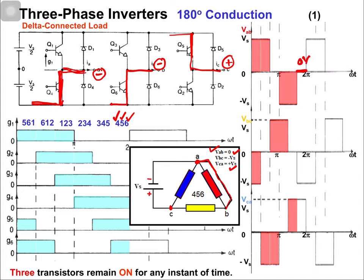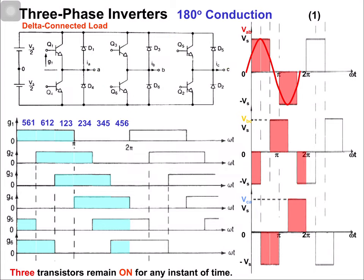If we continue these switching states we can move onward. All of these waveforms are 120 degrees displaced with respect to each other, as you can observe. At 120 degrees, the line voltage vbc is present, and from that point onward at 120 degrees, the line voltage vca is present. These are balanced voltage waveforms, each at 120 degrees with respect to the others.